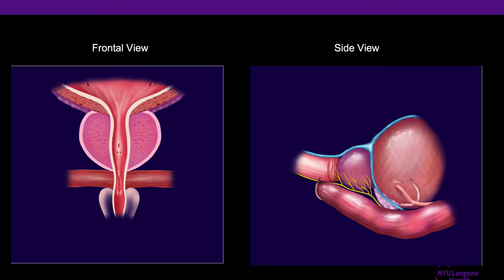Let's begin by discussing the anatomic location of the prostate. The prostate is a walnut-shaped gland that's located below the bladder and anterior, or on top of, the rectum. As you can see from this frontal view, the prostate completely surrounds the urethra, which is a tube which drains urine out of the body.